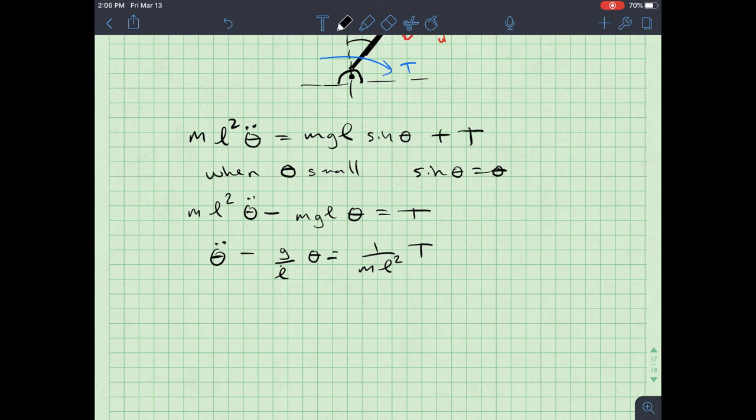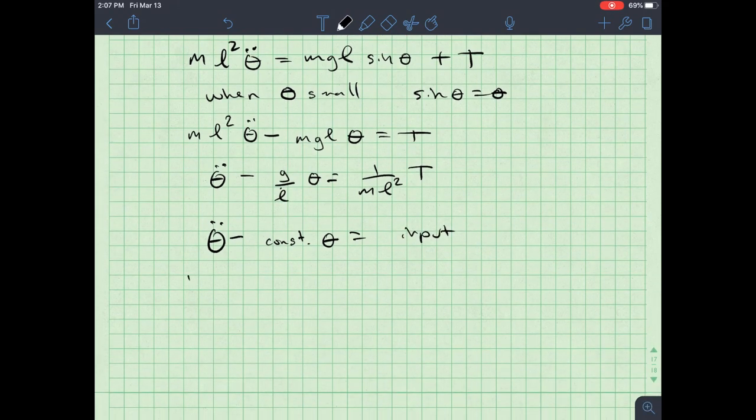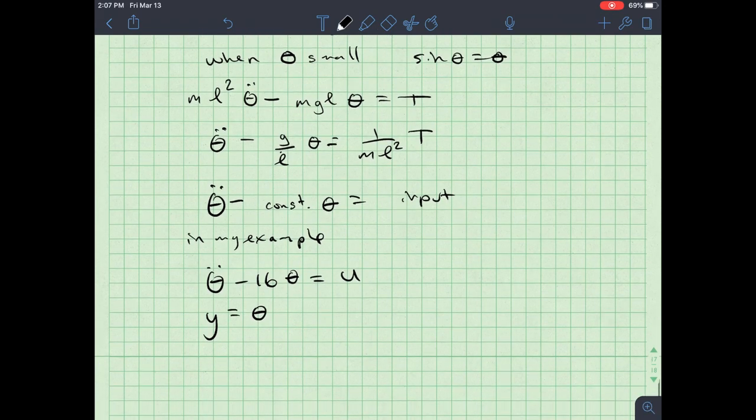All right. And so I've now got an interesting, good equation here. So in fact, here's what I've got, I've got theta double dot minus, so for this example, what I'm going to do is this. So theta double dot and then I can have some constant times theta is equal to, you know, some constant input. In my example, this equation is theta double dot minus 16 theta is equal to U, U being my input to the system. And so the output Y is just theta.